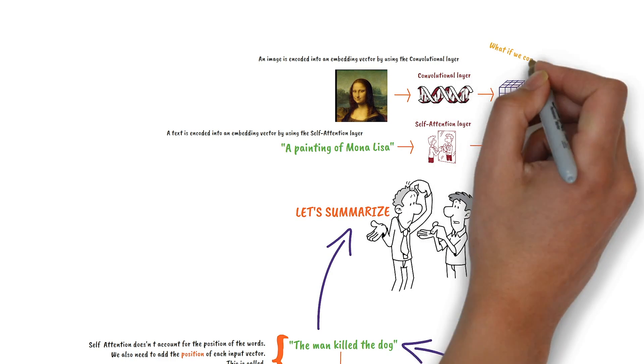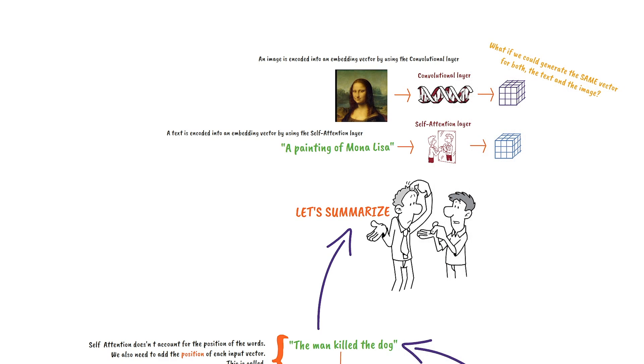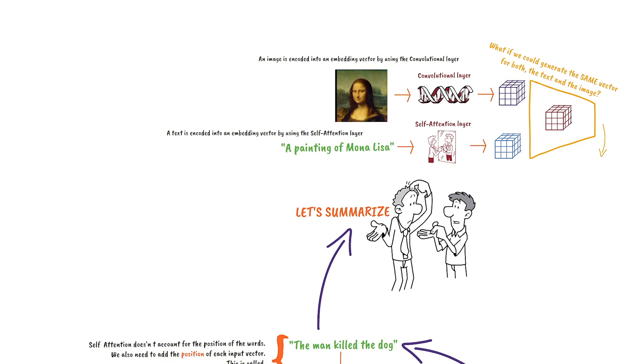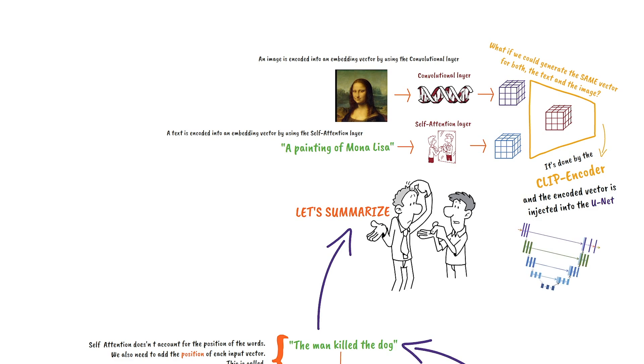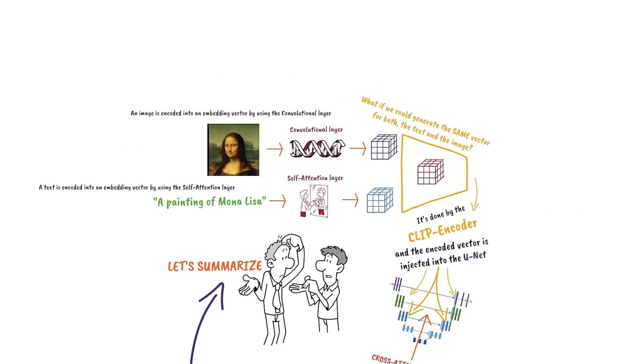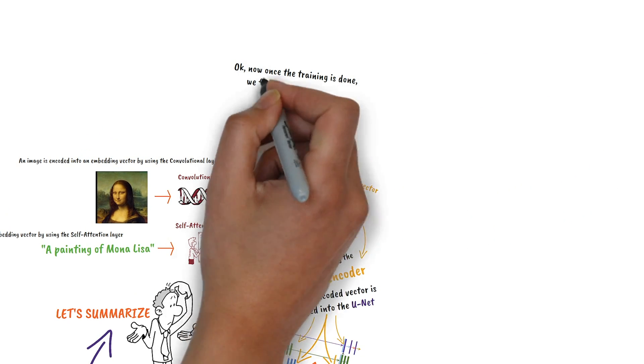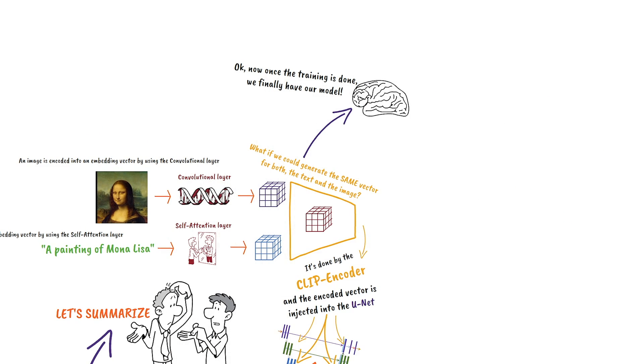What if we could use the same vector for both of them? That's actually done by the clip encoder. And the vector is fed into the U-net. And here we have our trained model. Fortunately that's all done for us by Stability AI.